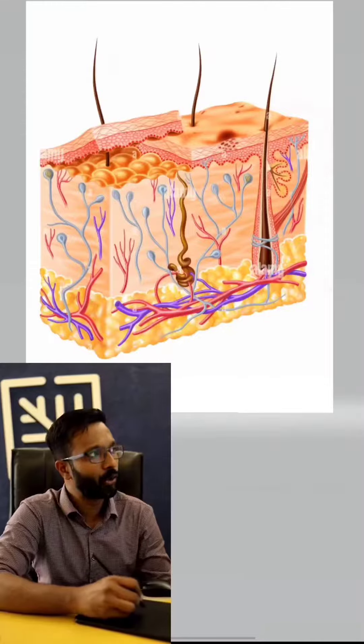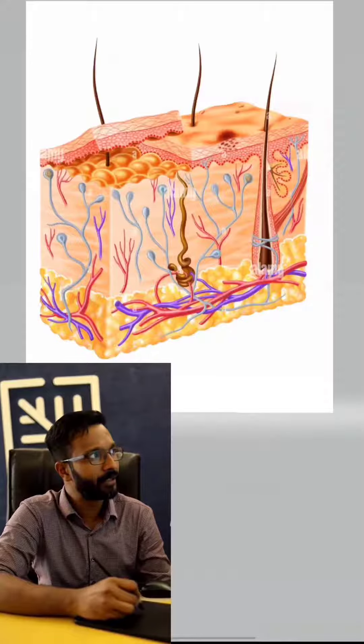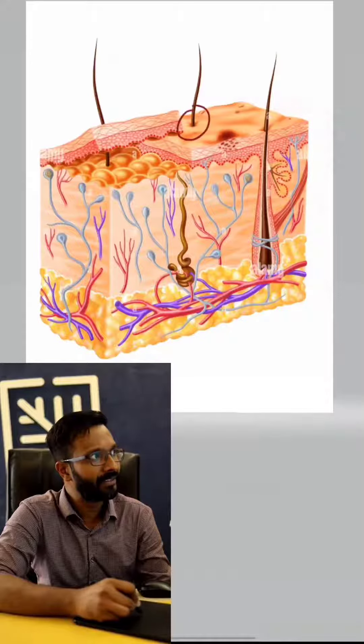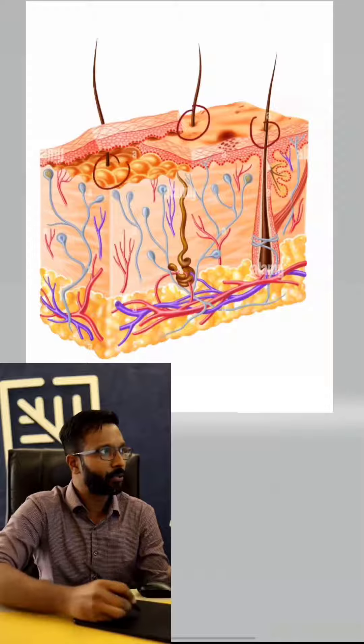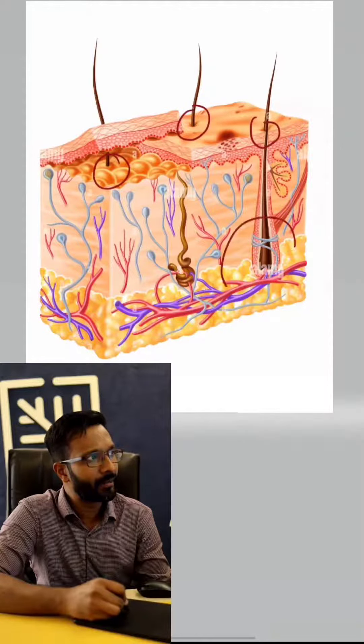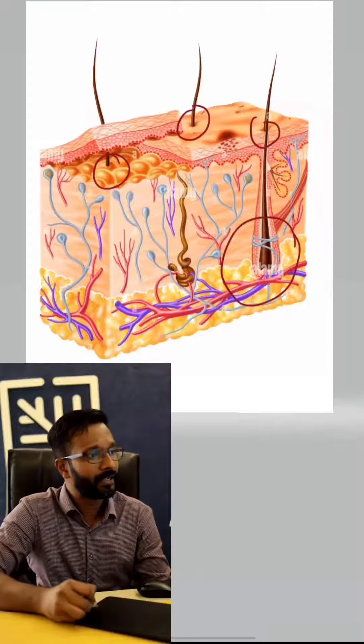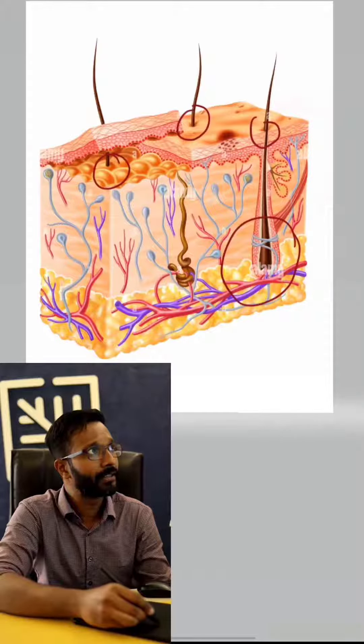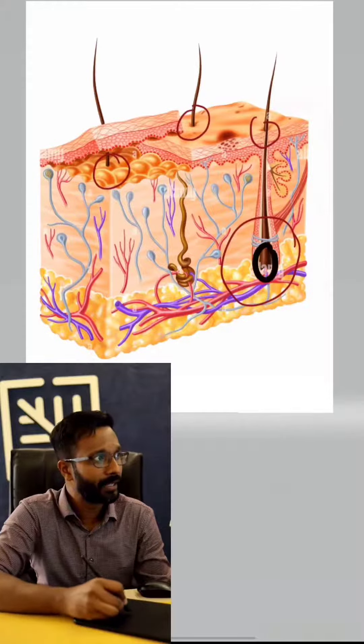This cross-section shows the skin. The hair is deep inside the skin. At the top, it has a bulb.